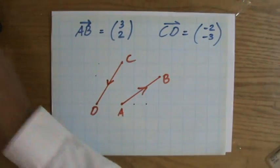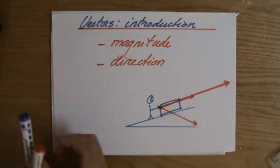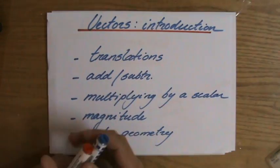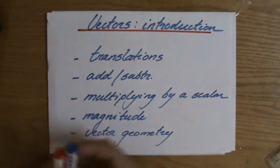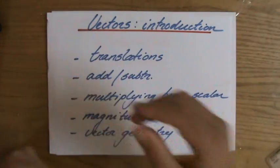Quickly to the next videos. Vectors have a magnitude and a direction, and what are we going to talk about? We're going to talk about translations, adding and subtracting vectors, multiplying by a scalar, the magnitude of a vector, and finally, vector geometry. See you at the next video.